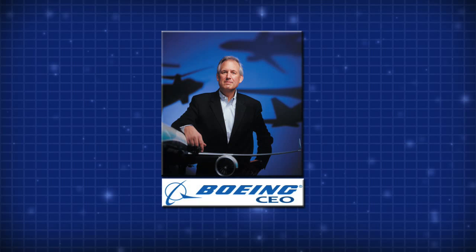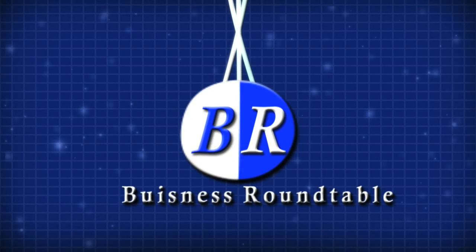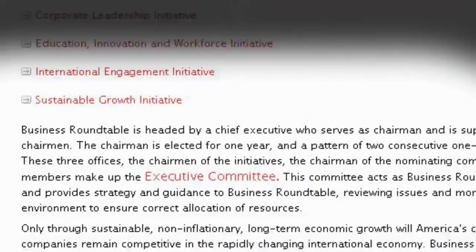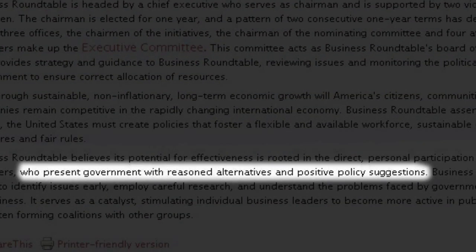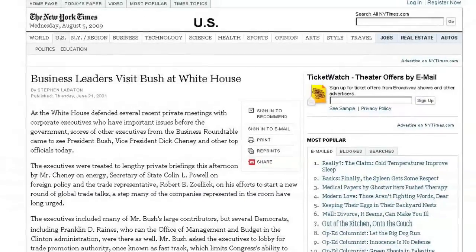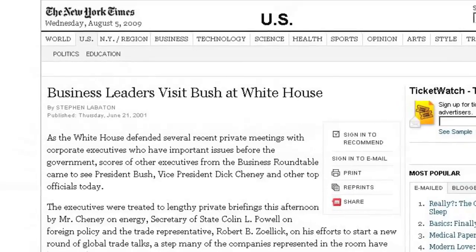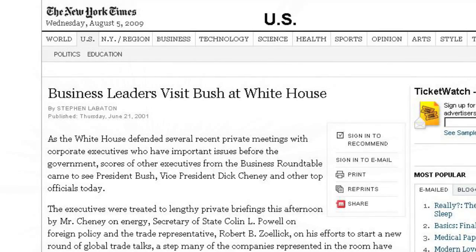The current CEO of Boeing, James McNerney Jr., is a sitting member of the Business Roundtable. The Business Roundtable is comprised of CEOs of the top 160 corporations who present government officials with reasoned alternatives and positive policy suggestions. Also, it is not unusual for Business Roundtable members to meet with the President and his staff in private.